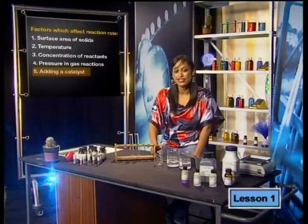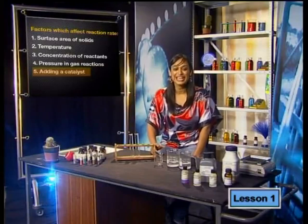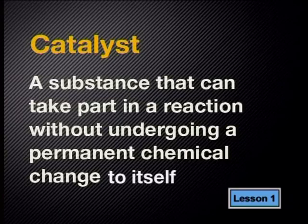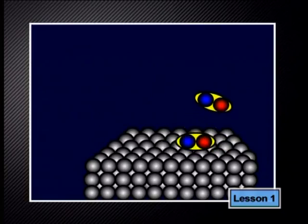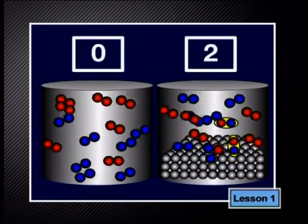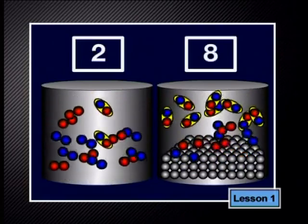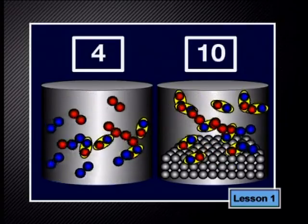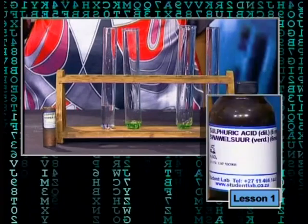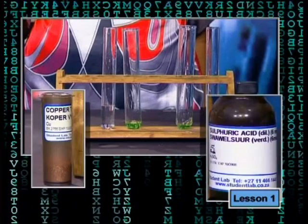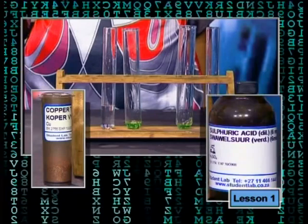The last factor that affects the rate of chemical reactions is the addition of a catalyst. A catalyst is a substance that can take part in a reaction without undergoing a permanent chemical change itself. A catalyst lowers the activation energy of a reaction by providing a surface for reactant molecules to collide, so in the presence of a catalyst, more effective collisions take place and the rate of reaction increases. For example, we can increase the reaction rate of zinc with sulfuric acid by adding copper — in this case, copper is the catalyst.